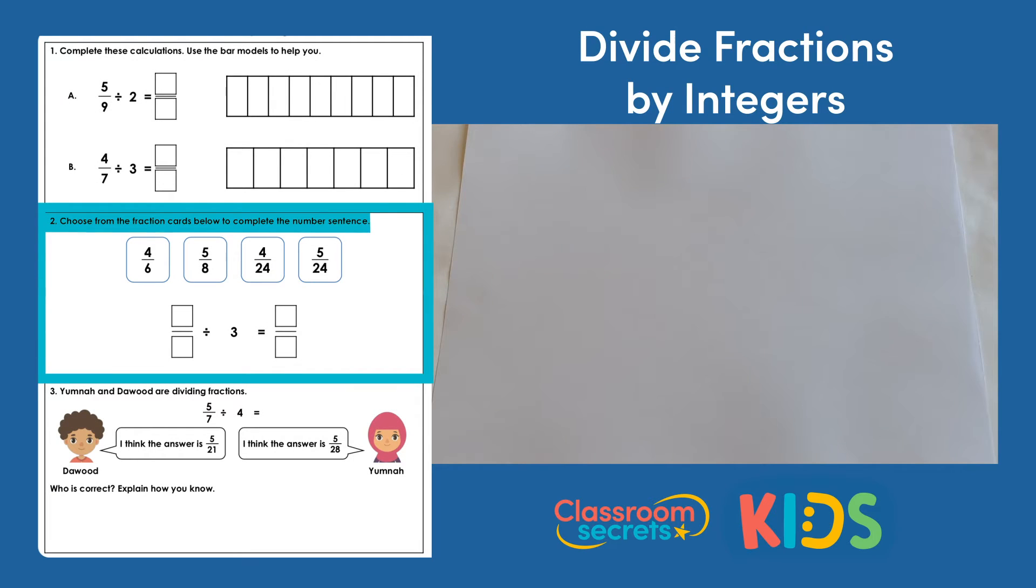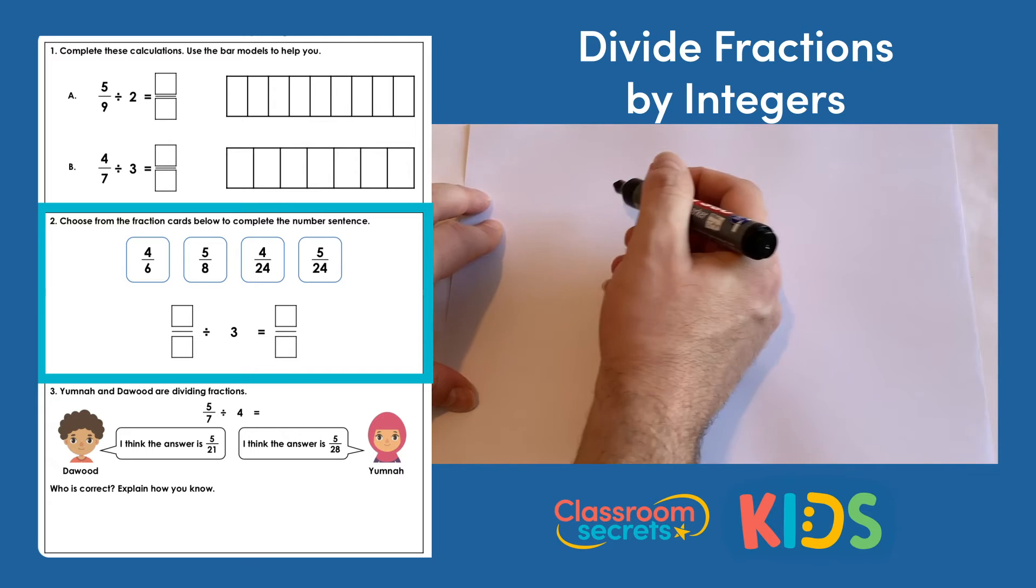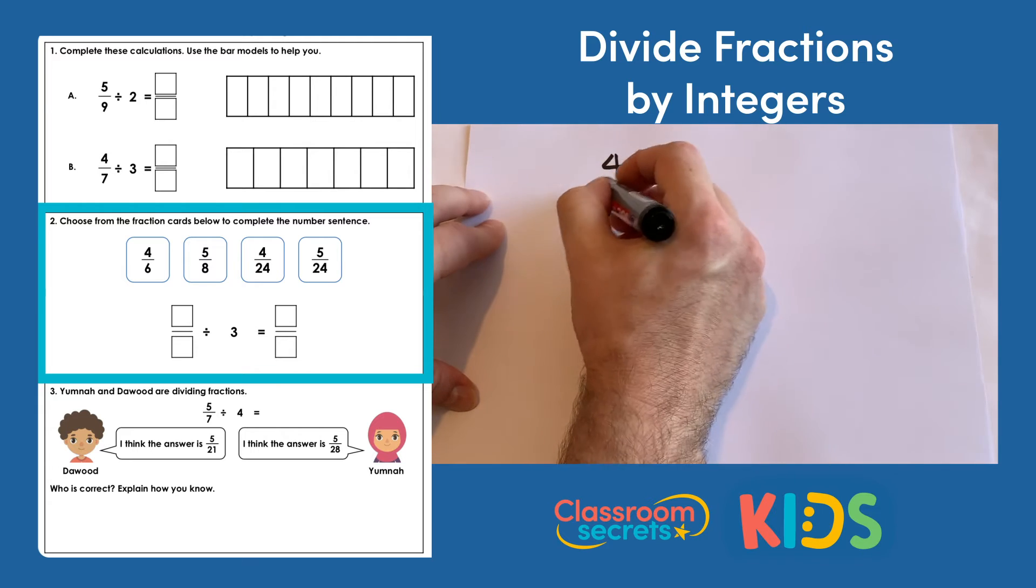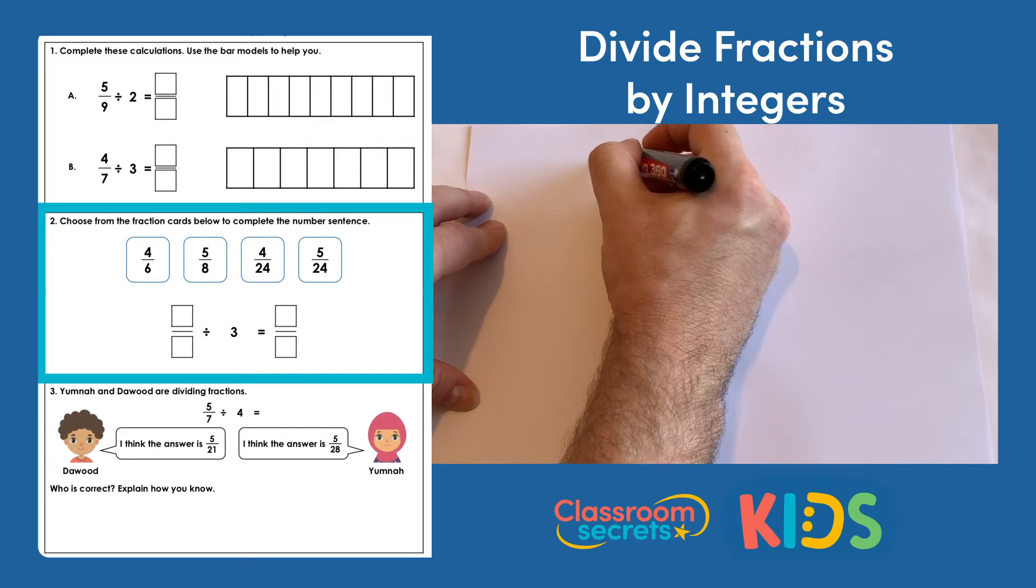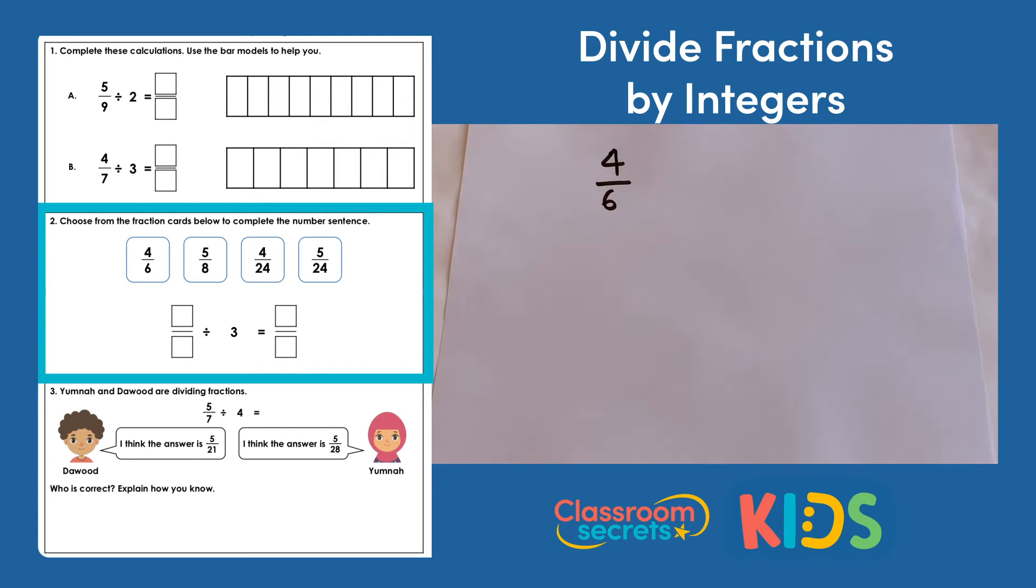Question 2 says choose from the fraction cards below to complete the number sentence. So we have 4 sixths, 5 eighths, 4 twenty-fourths and 5 twenty-fourths. So we're dividing by 3. So we have to choose 2 of those fraction cards to complete the number sentence. Let's just start by going through them one at a time then. So if we start with 4 sixths divided by 3 and we'll see if the result of this matches any of the other fraction cards that we have.